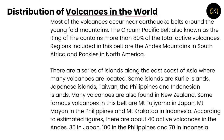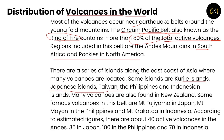The distribution of volcanoes in the world: Most volcanoes occur near earthquake belts around young fold mountains and tectonic plate edges. The Circum-Pacific Belt, also known as the Ring of Fire, contains more than 80% of the total active volcanoes. The region includes the Andes mountains in South America and the Rockies in North America, plus a series of islands along the east coast of Asia — the Kuril Islands, Japanese Islands, Taiwanese Islands, the Philippines, and the Indonesian Islands.